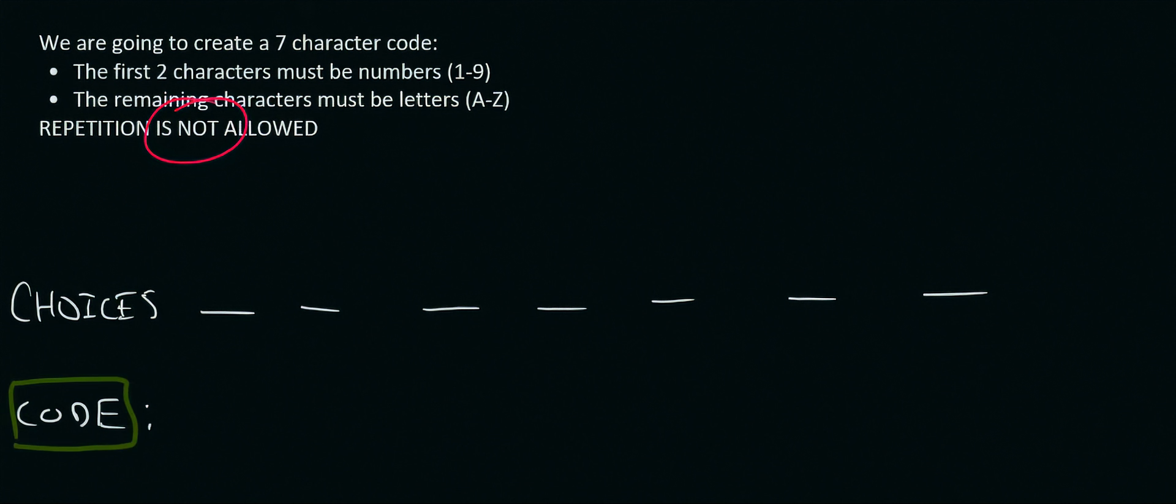So for the first choice you have to choose a number. Well there are nine numbers available and let's say the number we chose was a 3. This nine represents nine different options. Then for the second number you only have eight options available because now you're not allowed to repeat. So if you chose a 3 then you can't choose a 3 again. So there's only eight options available. Let's say we chose a 4.